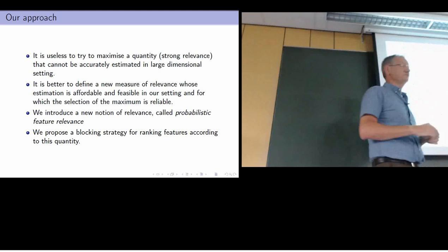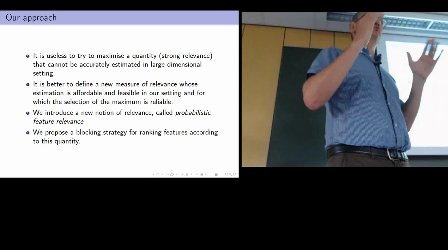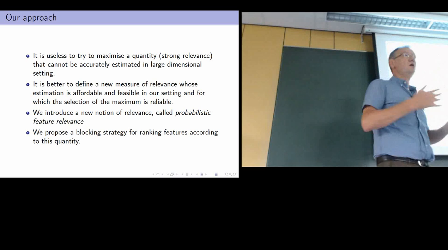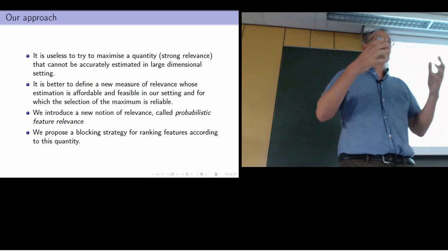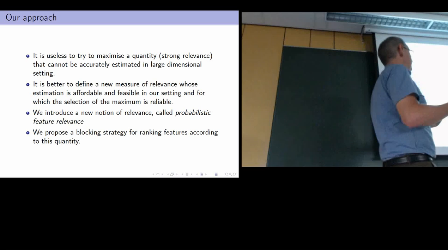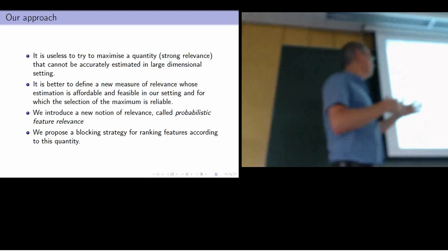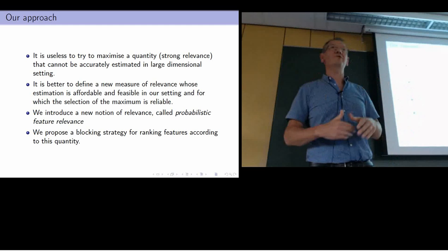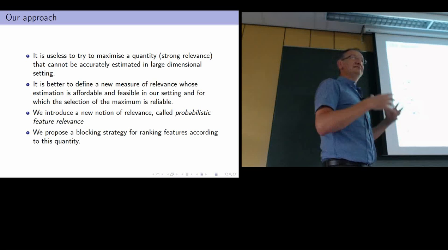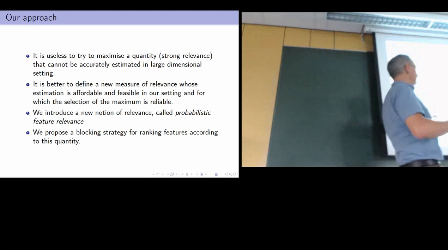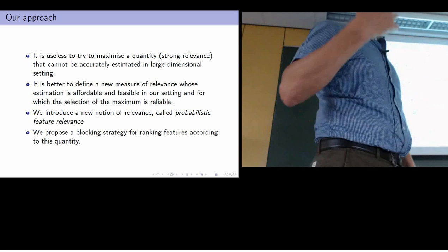What I propose in this talk is the idea that in feature selection, people know very well which quantity should be measured — the problem is that they are not able to measure it, because of high dimensionality and too few samples. The idea is to target a quantity which is affordable and feasible, and for which the selection of the maximum could be reliable. We reduce our expectations: instead of targeting the strong relevance quantity, we target what I call the probabilistic feature relevance, which is an expectation of weak relevance. I will also talk about a paired estimation strategy to reduce variance and deal with instability.